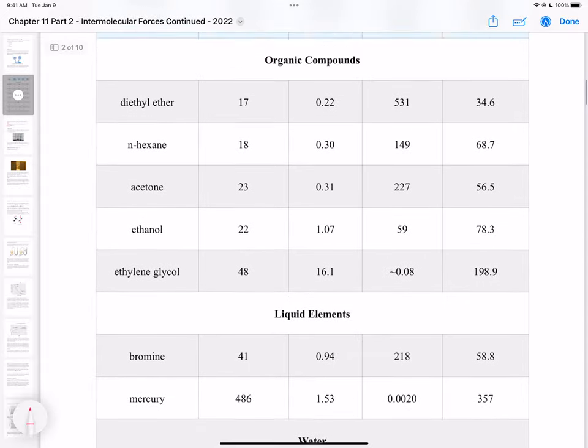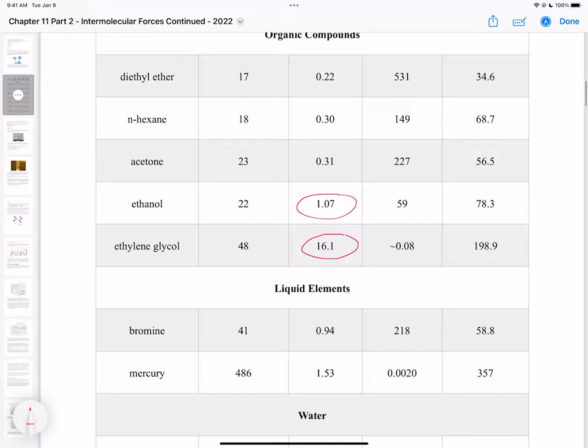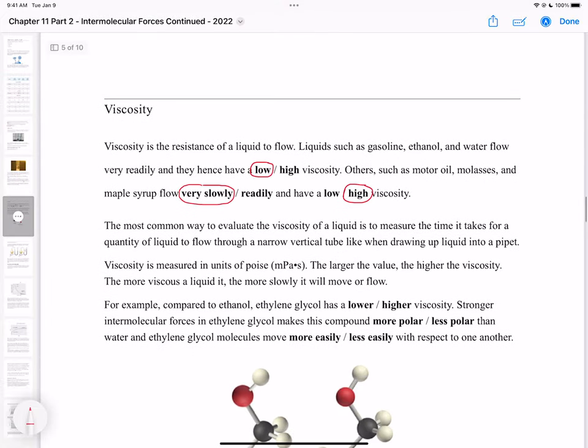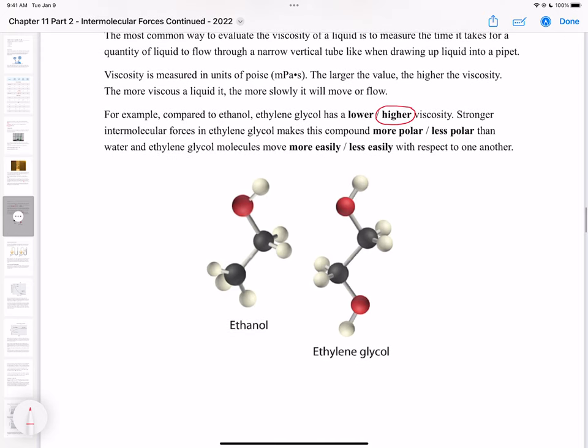Looking at our table, ethanol has a viscosity of 1.07, but ethylene glycol has almost 16 times that - it's much more viscous. Ethylene glycol has two OH groups, so it has twice as many intermolecular forces as ethanol, making the molecule more polar.